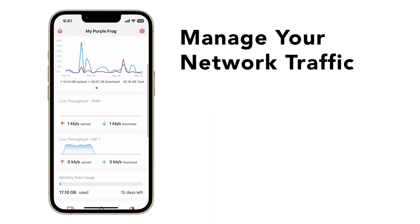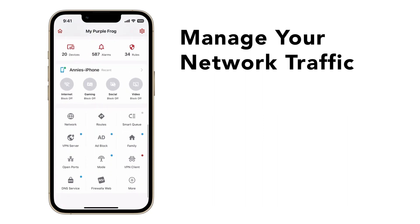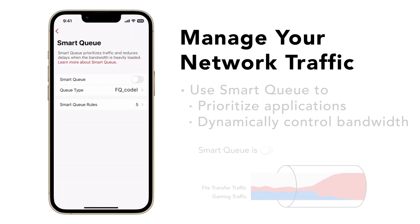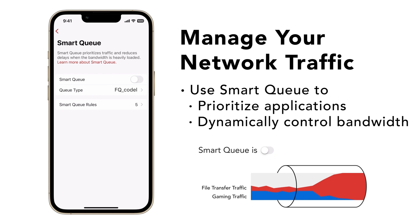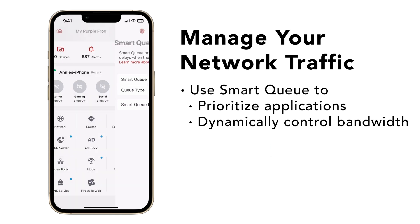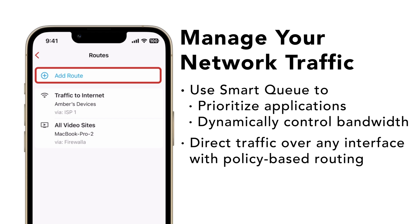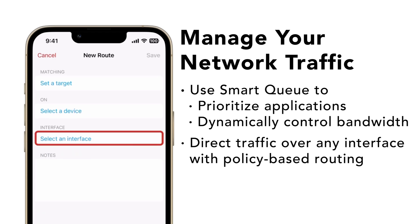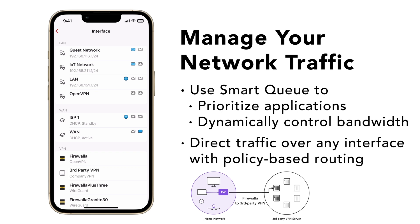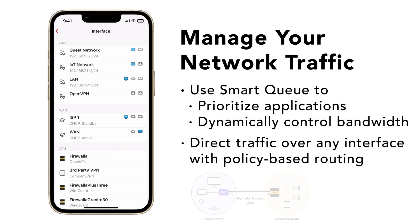If you worry about your IoT devices consuming too much bandwidth, you can easily prioritize traffic by either device or destination using Firewalla's Smart Queue. Smart Queue monitors and dynamically manages bandwidth usage. Additionally, Firewalla's policy-based routing allows you to send any device's network traffic to any destination you'd like, such as a third-party VPN server, a secondary WAN, or a site-to-site VPN.